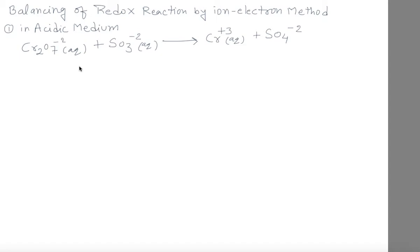Hello students. Now we are going to do the balancing of redox reactions by the ion electron method in acidic medium. Our main task is to balance the reaction in acidic medium. There are different rules, and we will do it by the easiest method. This is a redox reaction in which one is the oxidation half reaction and one is the reduction half reaction.